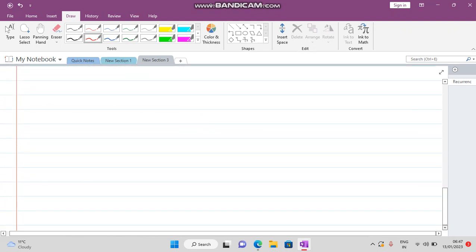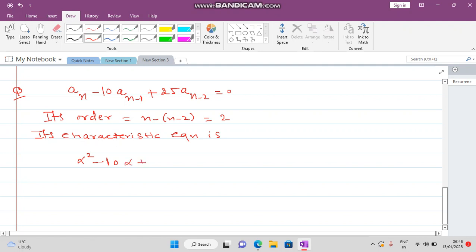Now we solve one more example. The question is a_n minus 10a_{n-1} plus 25a_{n-2}. What is its order? Its order is n minus (n-2), which is 2. Its characteristic equation is alpha squared minus 10 alpha plus 25 equals 0.